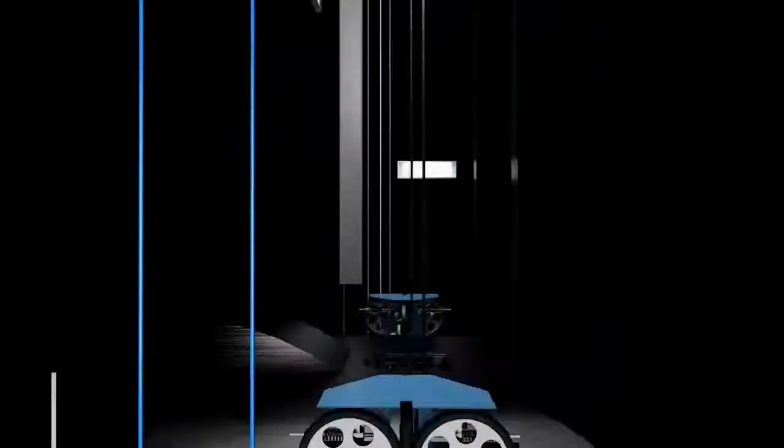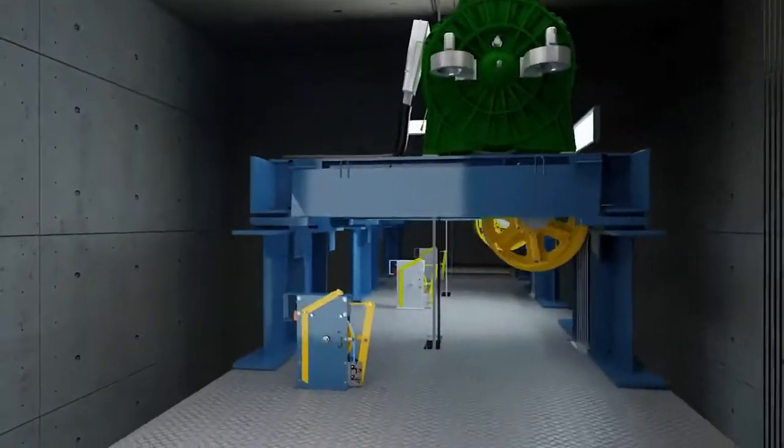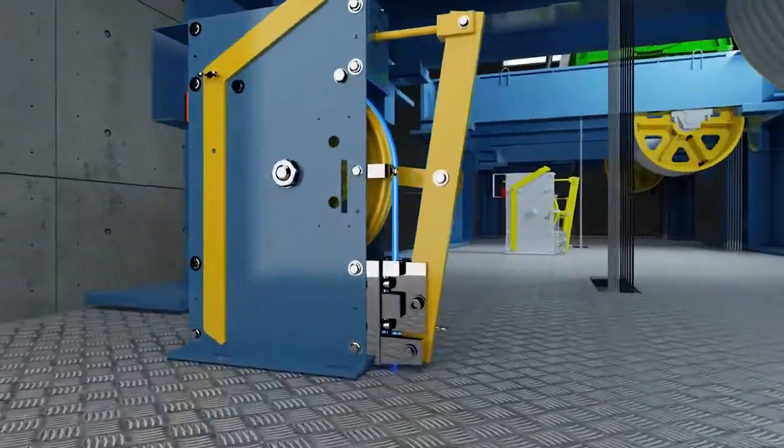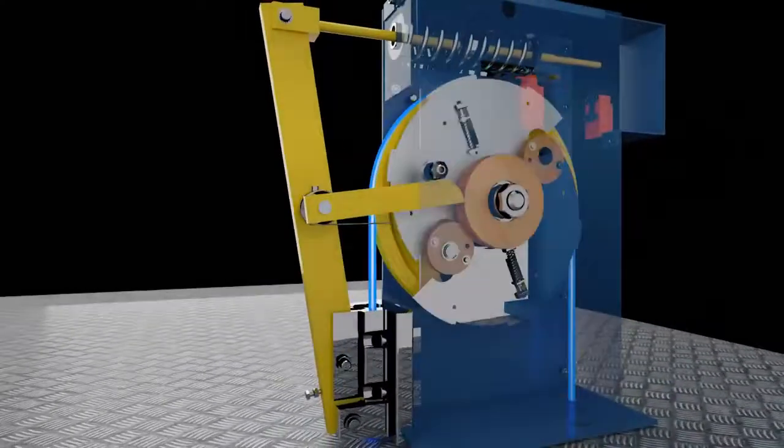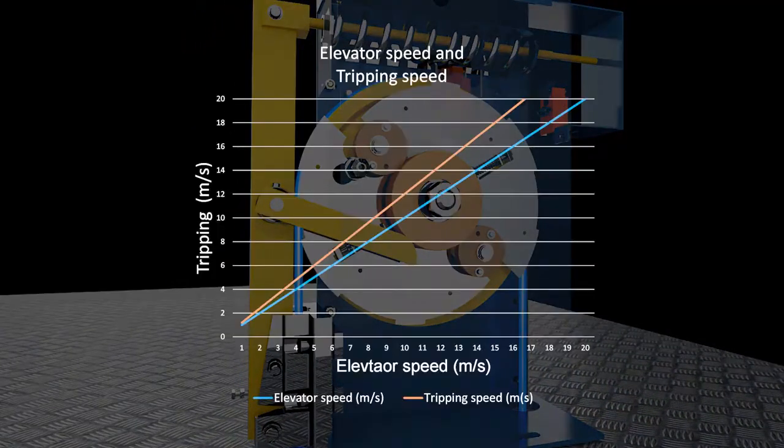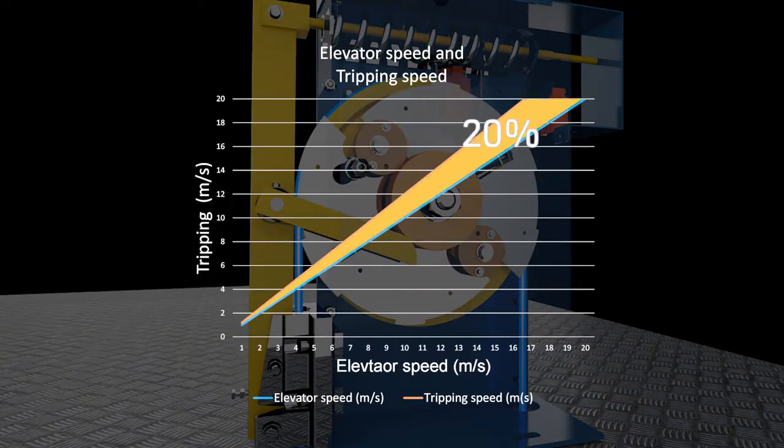An elevator car is connected to a device called an over-speed governor with a looping steel rope. If the speed of the elevator exceeds a preset value, typically 20% more than the elevator's normal speed, the over-speed governor activates the emergency braking system.